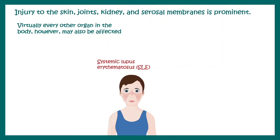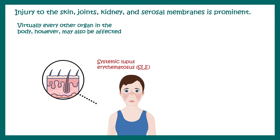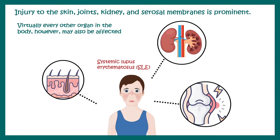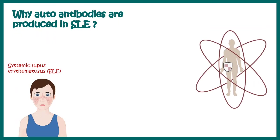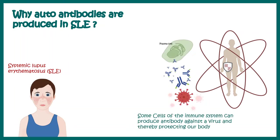Injury of skin, joints, and kidney is very common and prominent in systemic lupus. Now the question is: why are autoantibodies produced in systemic lupus erythematosus? Generally, our immune system protects our body from any type of harmful pathogen. Whenever a pathogen, let's say a virus, enters our body, specific antibodies are generated against the virus which coat the virus and inactivate it.